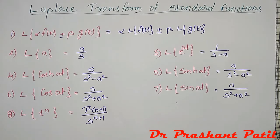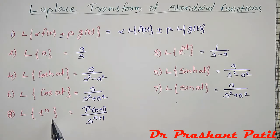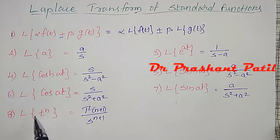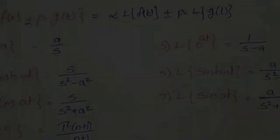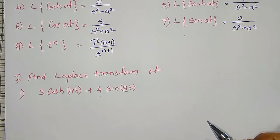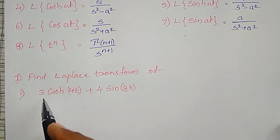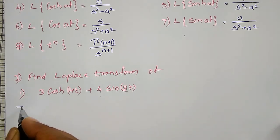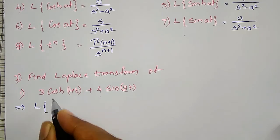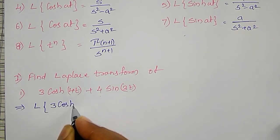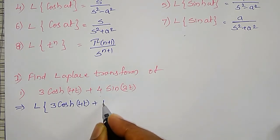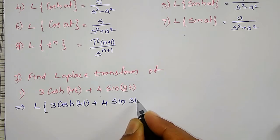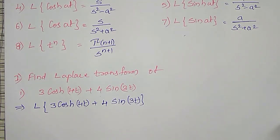In this video I am going to solve examples using all these trigonometric and hyperbolic functions, and in my next video I will solve examples on t to the power n separately. The first problem: find the Laplace transform of 3·cosh(4t) plus 4·sin(3t).